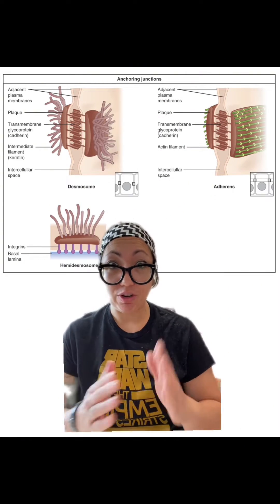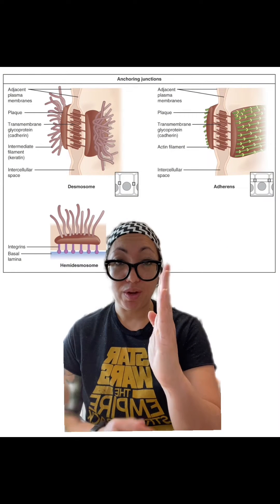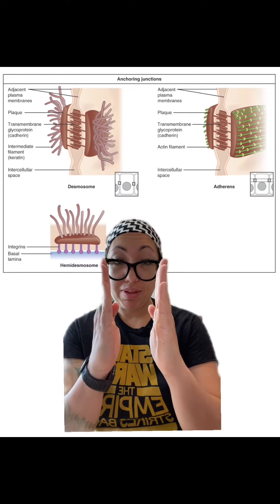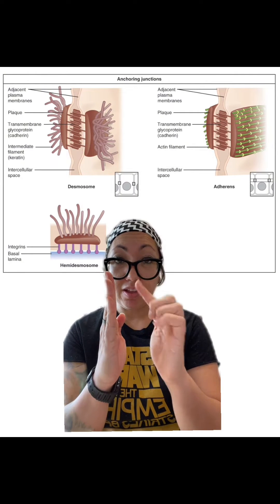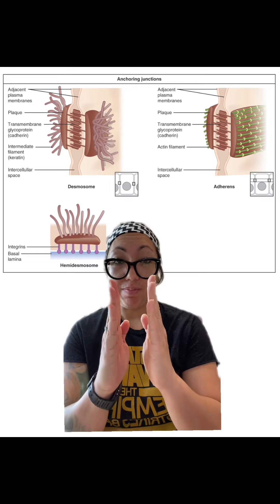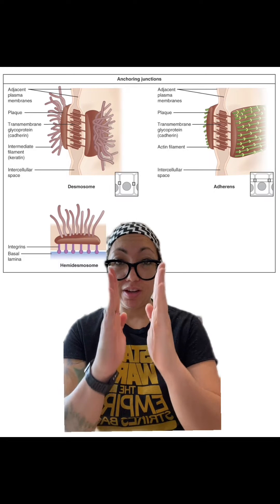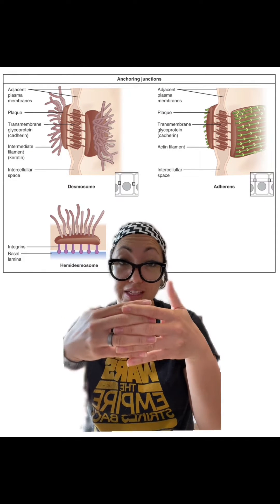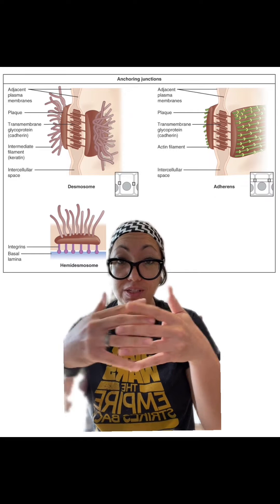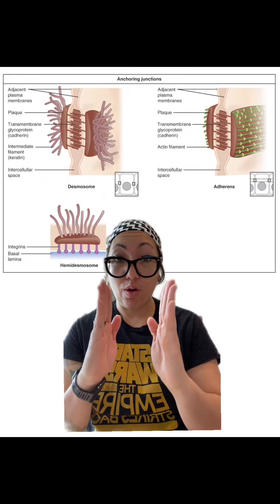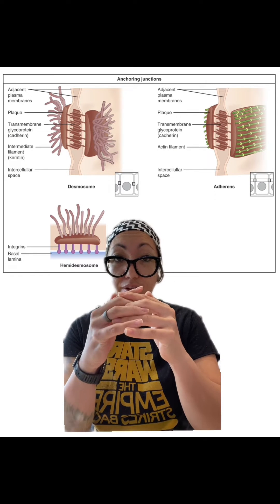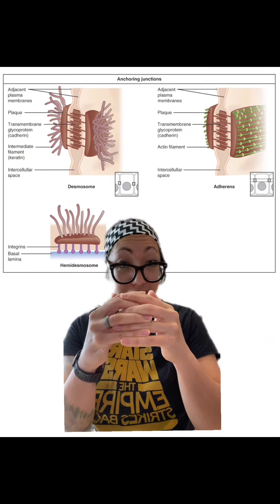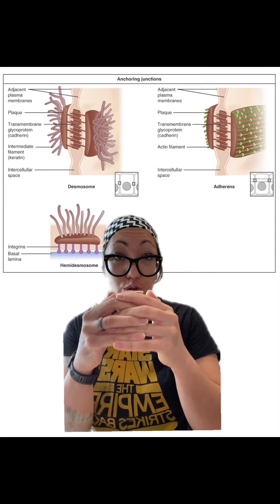Let me try to demonstrate right here. This would be a plaque from one cell, and this would be a plaque from another cell. In between is that space. So imagine these two plaques, and then you have these transmembrane proteins that are going to go from each plaque through the space and anchor to one another.